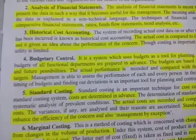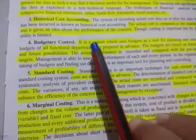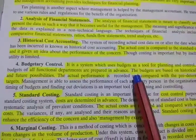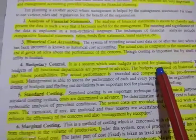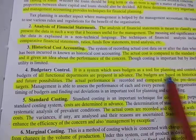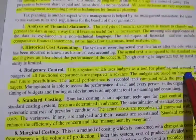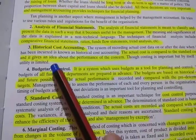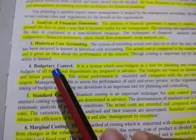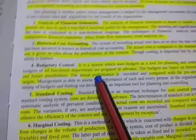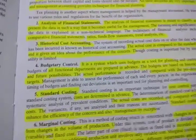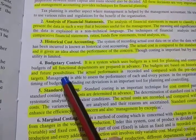Next is budgetary control — a very easy point. Every organization has a budget prepared for future plans, meaning future plans are set to guide the organization. The budget is based on historical data and future possibilities.